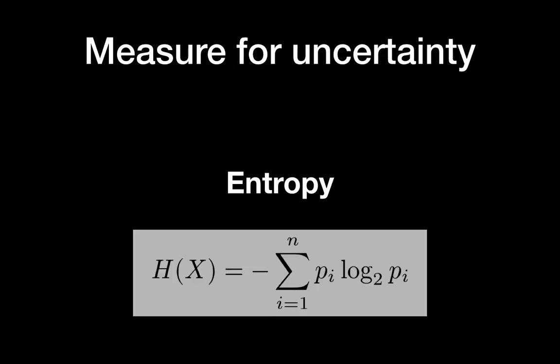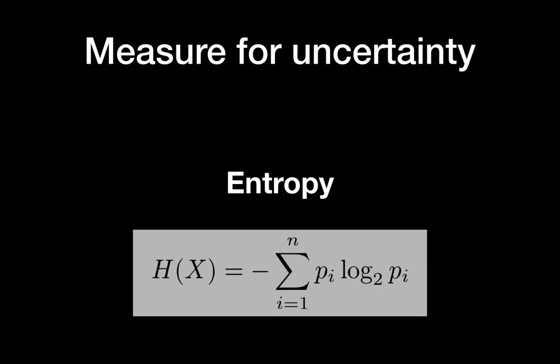Here's the equation of the Shannon entropy. I already calculated this Shannon entropy for our examples. You can see that the perfect coin has the highest entropy — we have one. The second example has the lowest entropy — zero. And the third example, we have some entropy in between.